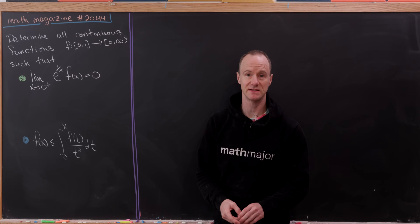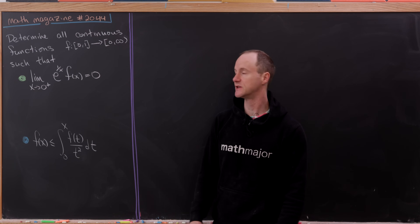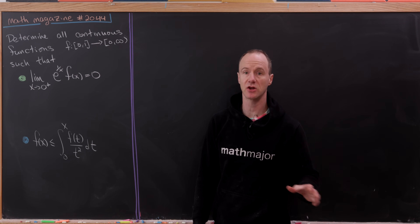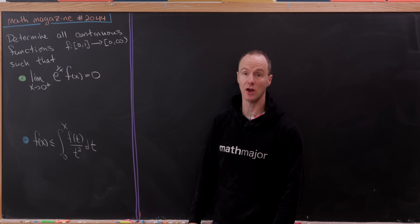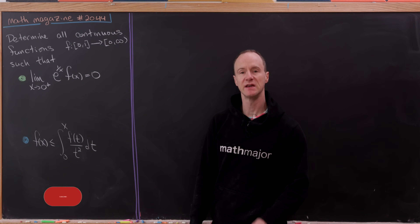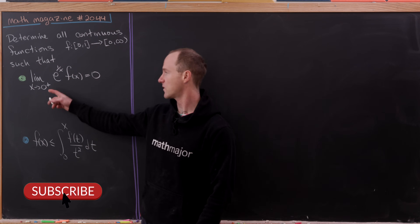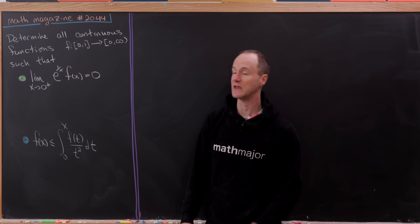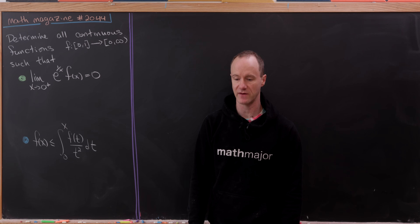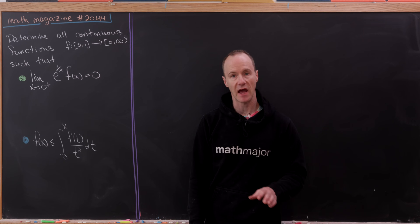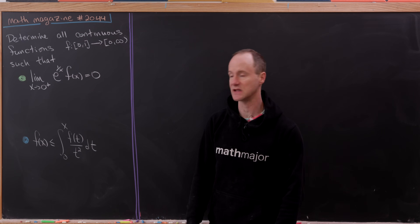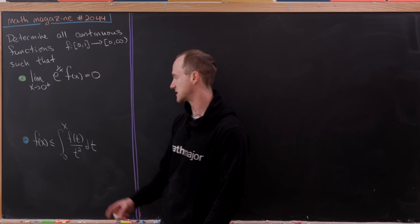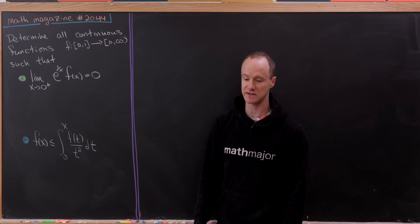Let's look at this nice problem from the math magazine. Our goal is to determine all continuous functions whose domain is the unit interval and codomain is the non-negative real numbers, satisfying two conditions. The first is the limit as x goes to 0 from above of e to the 1/x times f(x) equals 0. The second condition says f(x) is less than or equal to the integral from 0 to x of f(t) over t² dt.